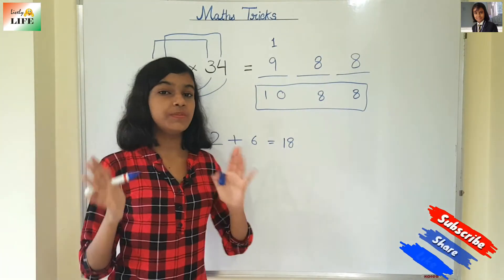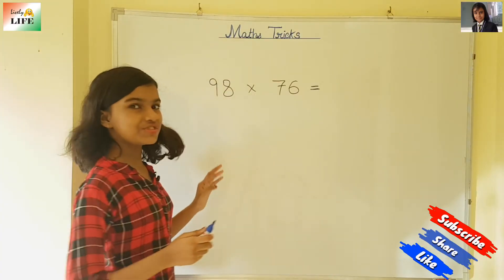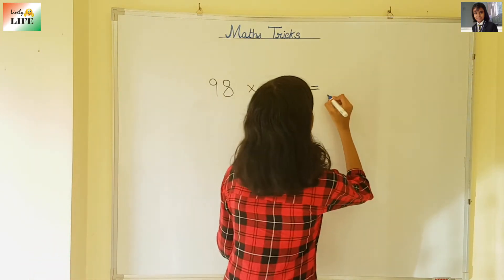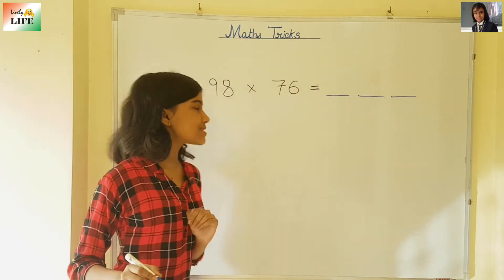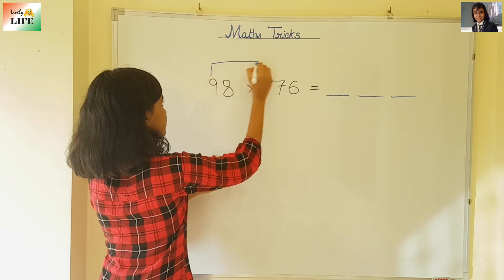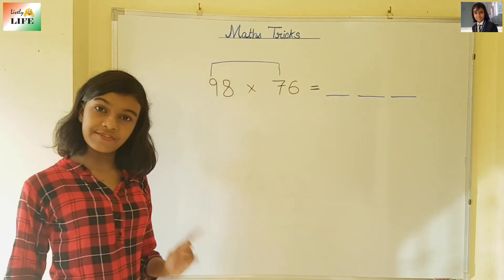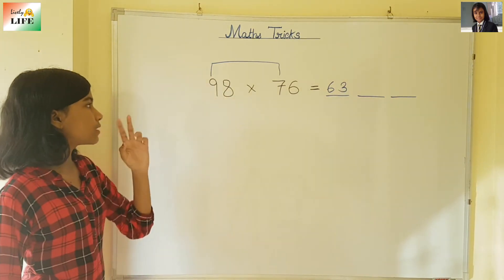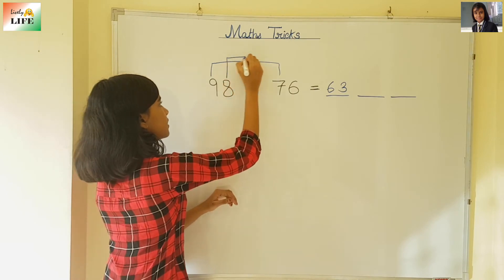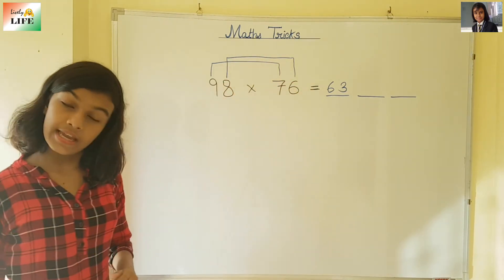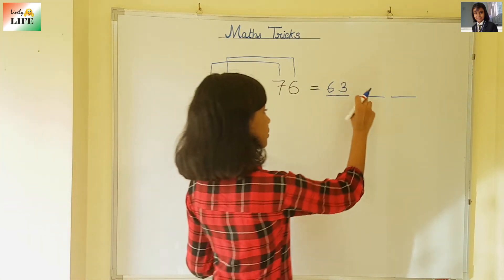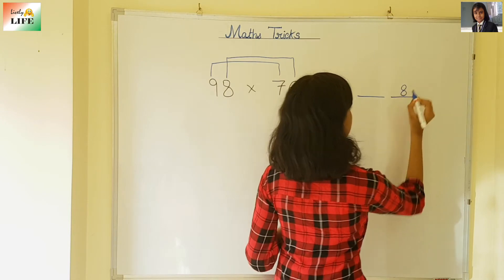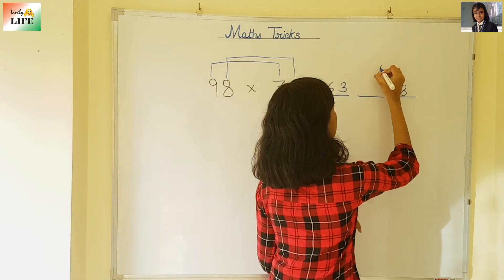Now let's solve another problem with bigger digits. Can you all see this question over here? 98 into 76. So what we need to do — put 3 dashes. Then 9 into 7 is 63. The first dash we are going to write 63. Then 8 into 6 is 48. We are not going to write it in the middle — we are going to write it in the last dash, and since we cannot write 48, we write 8 and carry 4.